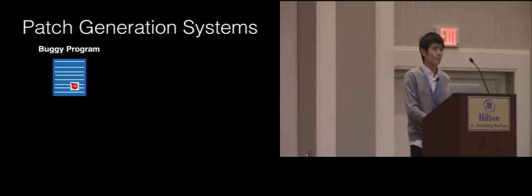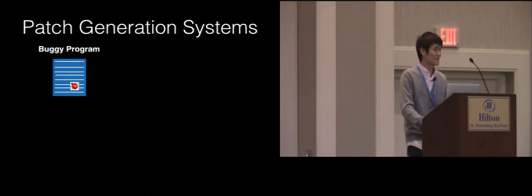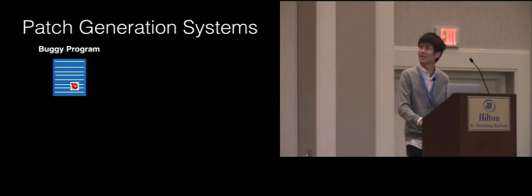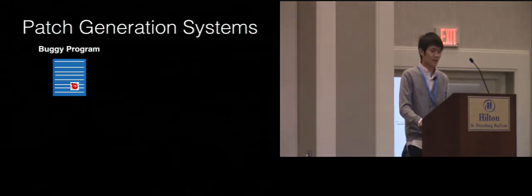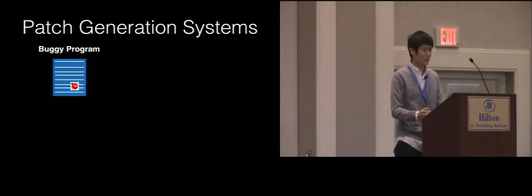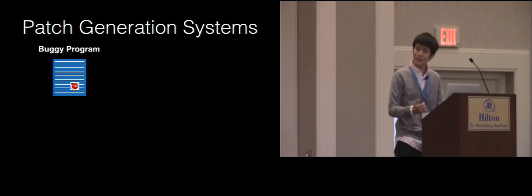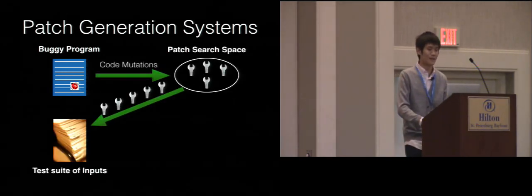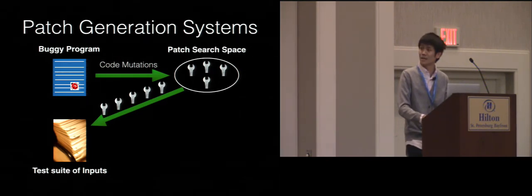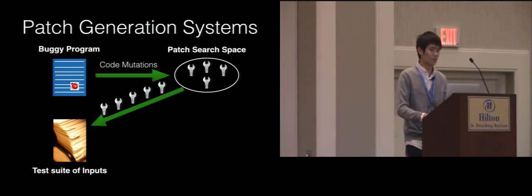Every program contains bugs. It would be nice if we had a patch generation system that automatically fixes bugs for us. State-of-the-art patch generation systems typically start with a buggy program, parse it into AST trees, and apply mutations to generate a search space of candidate patches. For each candidate patch, they use a test suite of inputs to validate them.